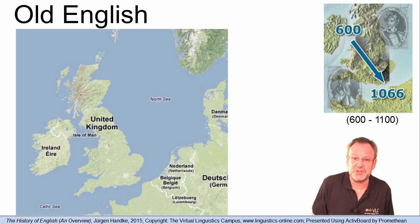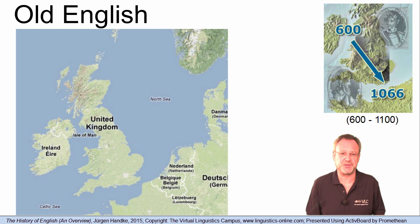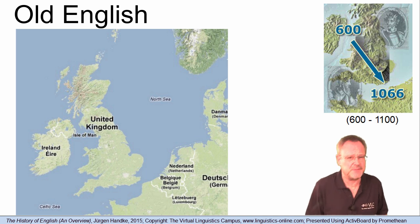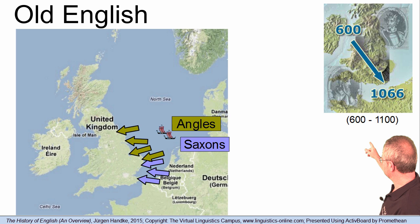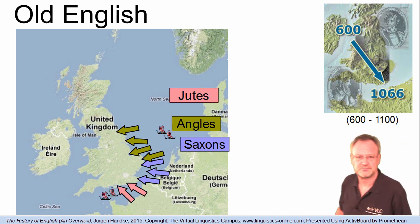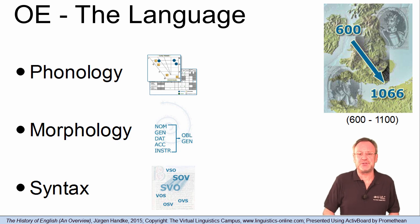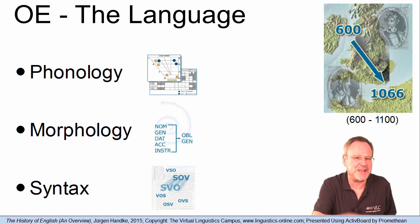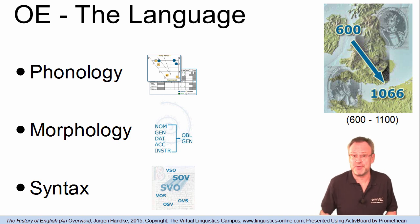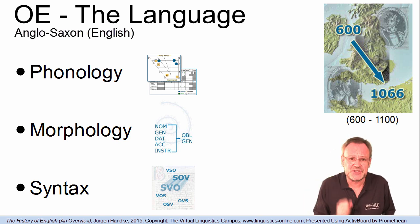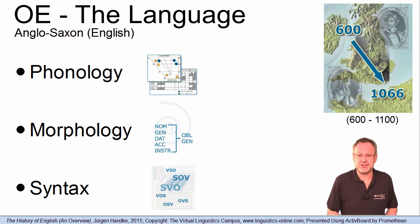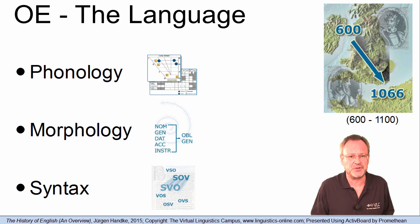The earliest period in the history of the English language is referred to as the Old English period. The origin of this Old English period goes back to the 5th century after Christ, when Germanic tribes invaded Britain. These tribes were the Saxons, the Angles, and the Jutes. Linguistically, the Old English period is generally defined as from 600 to 1100 after Christ. Due to the strong Germanic and especially the strong Saxon influence, the Old English period is often also referred to as Anglo-Saxon English. Its geographical extension was approximately identical with today's area of England.